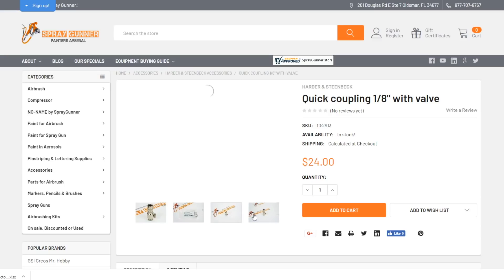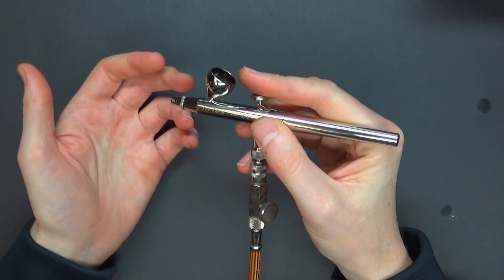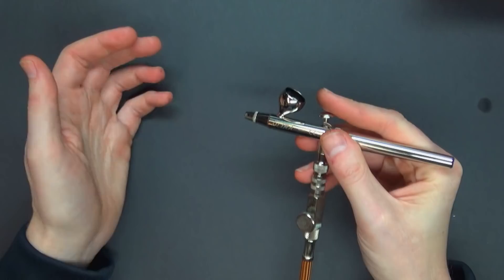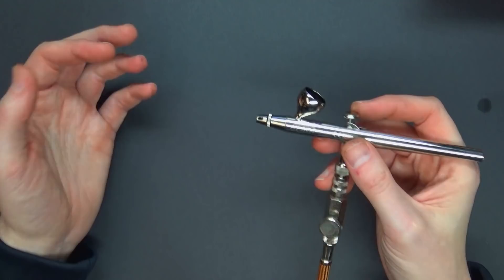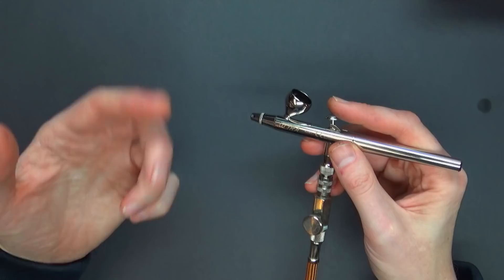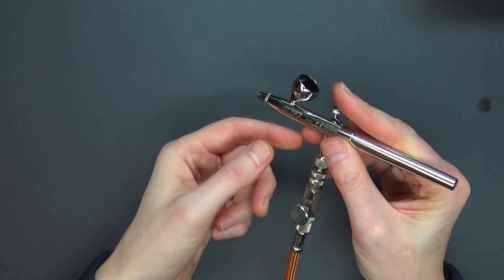I have a Grex one currently. You can use the Grex one, but I definitely recommend anything and everything Harder Steenbeck, especially their airbrushes. They are amazing quality. I know you're thinking, last time I saw your airbrush videos you're using Iwata Eclipse, which was great. I used that for a number of years, but I know in my heart I would have been a better miniature painting hobbyist if I had one of these Ultras from Harder Steenbeck.